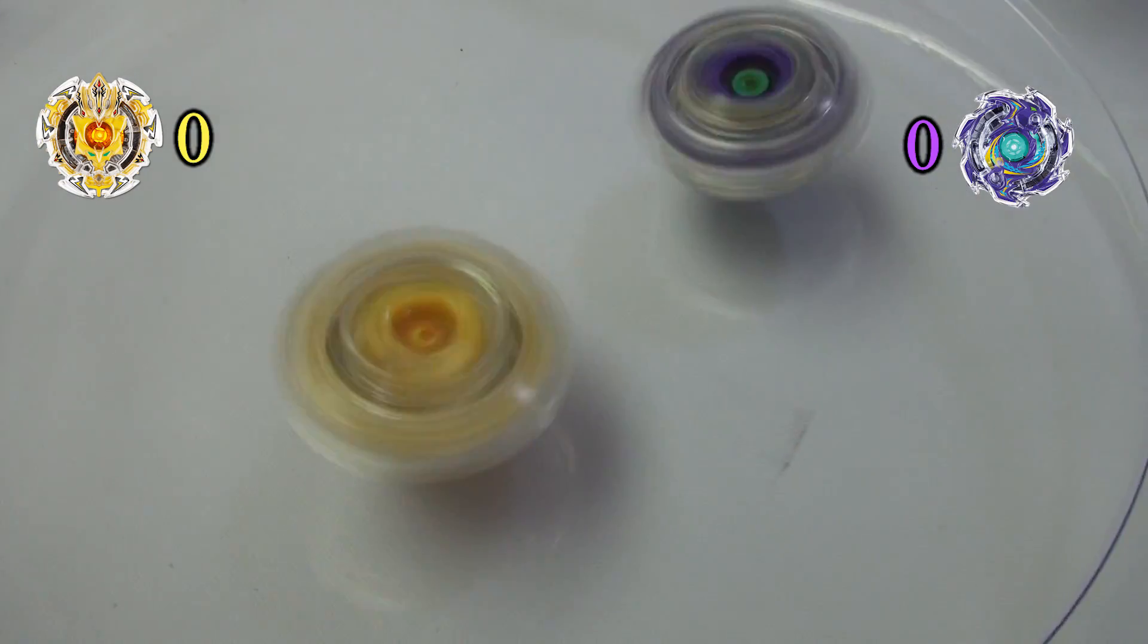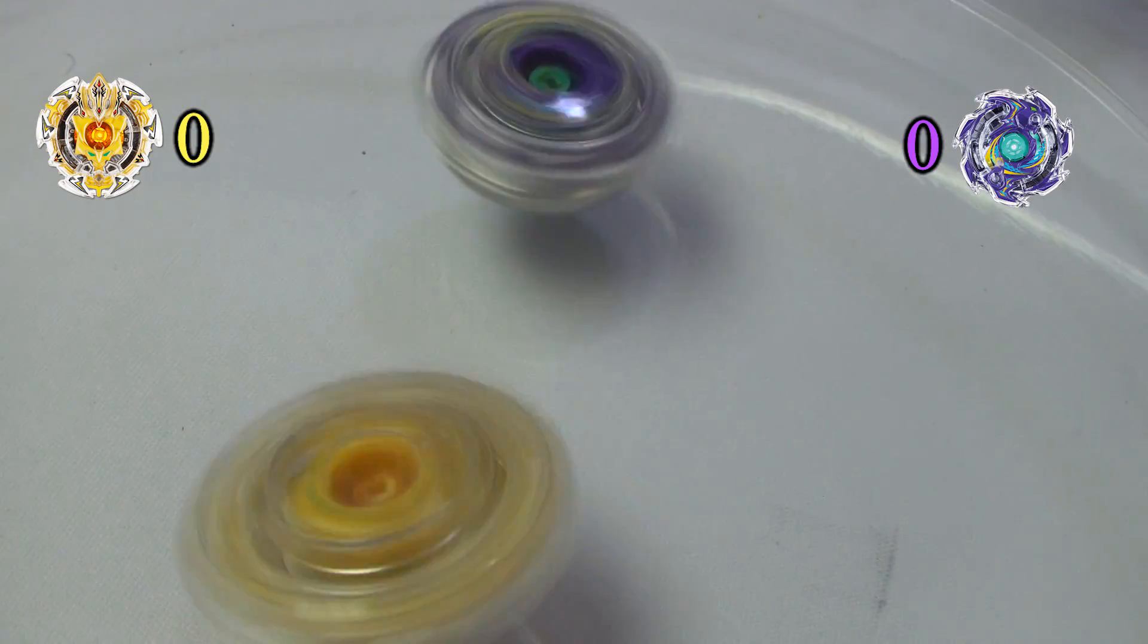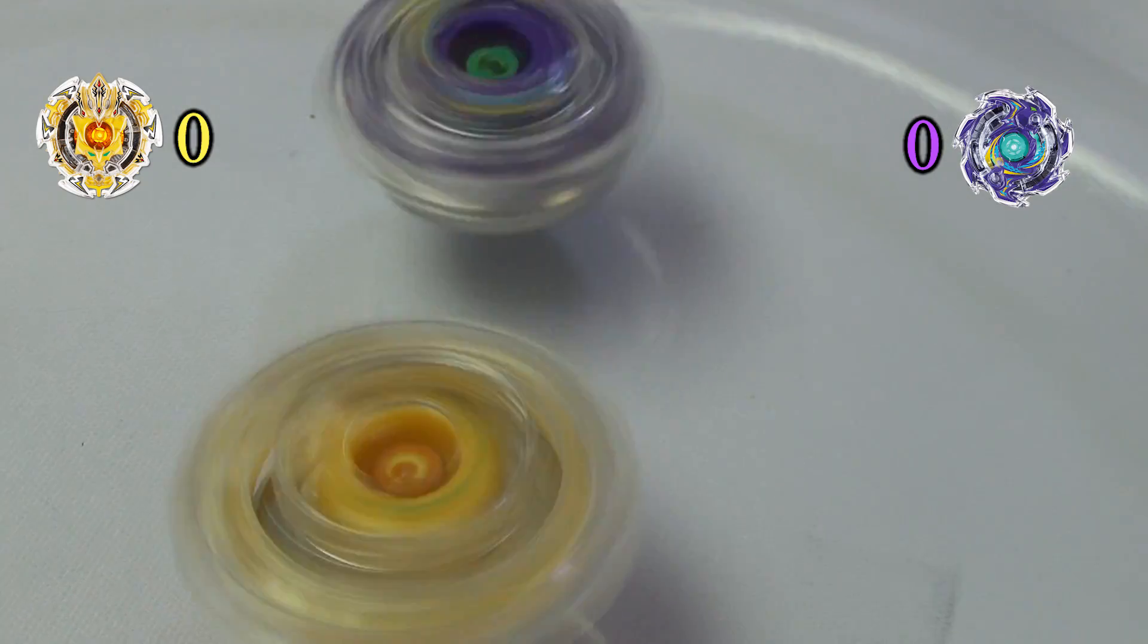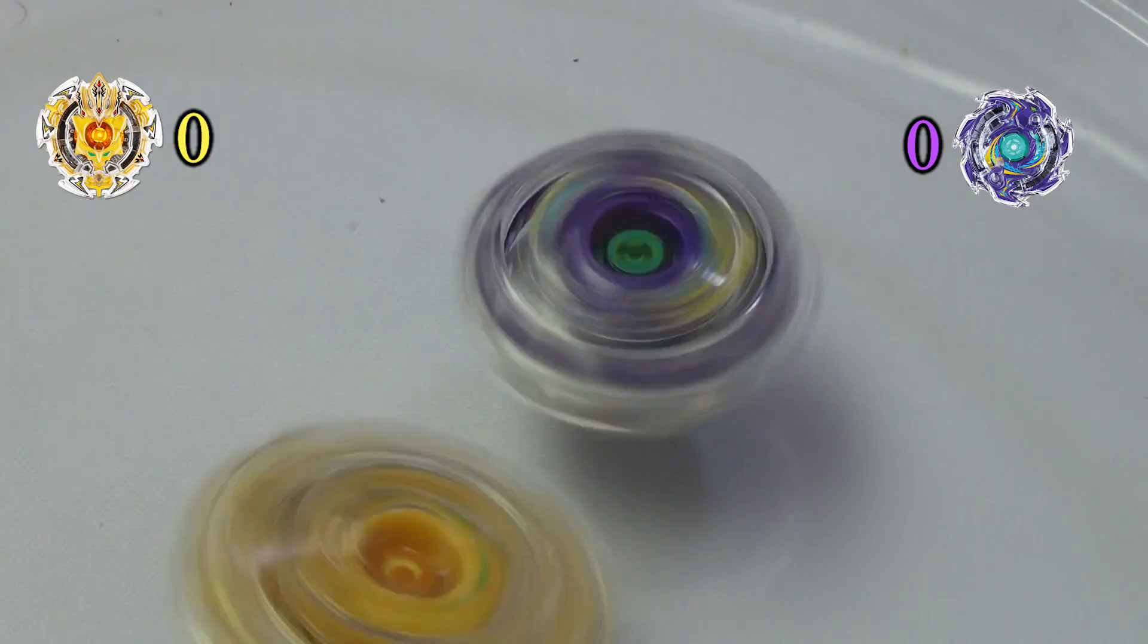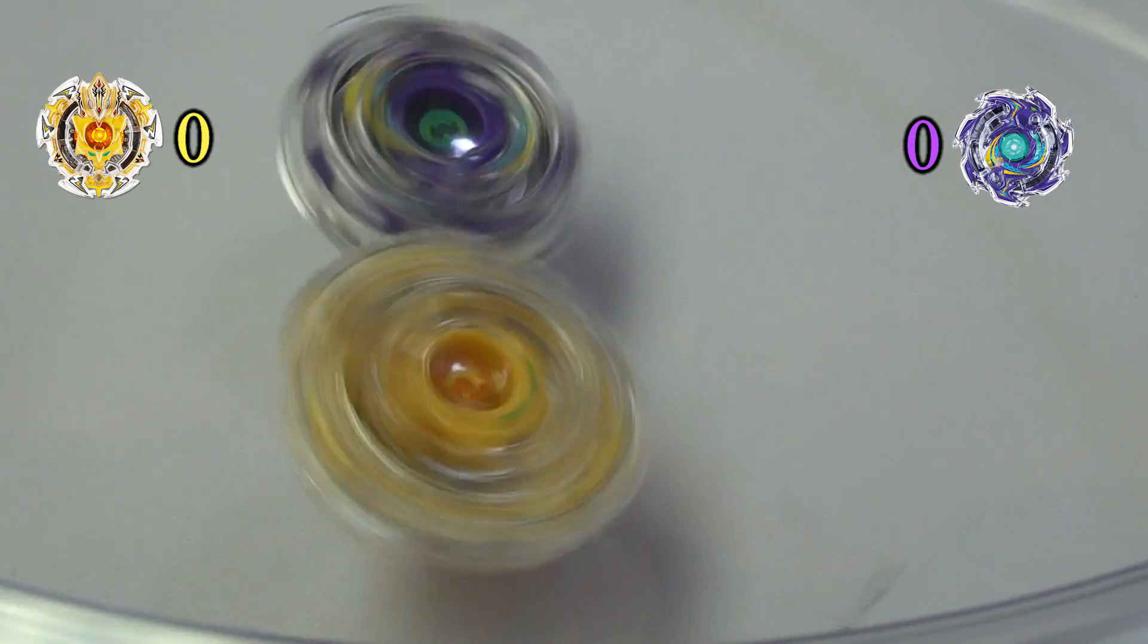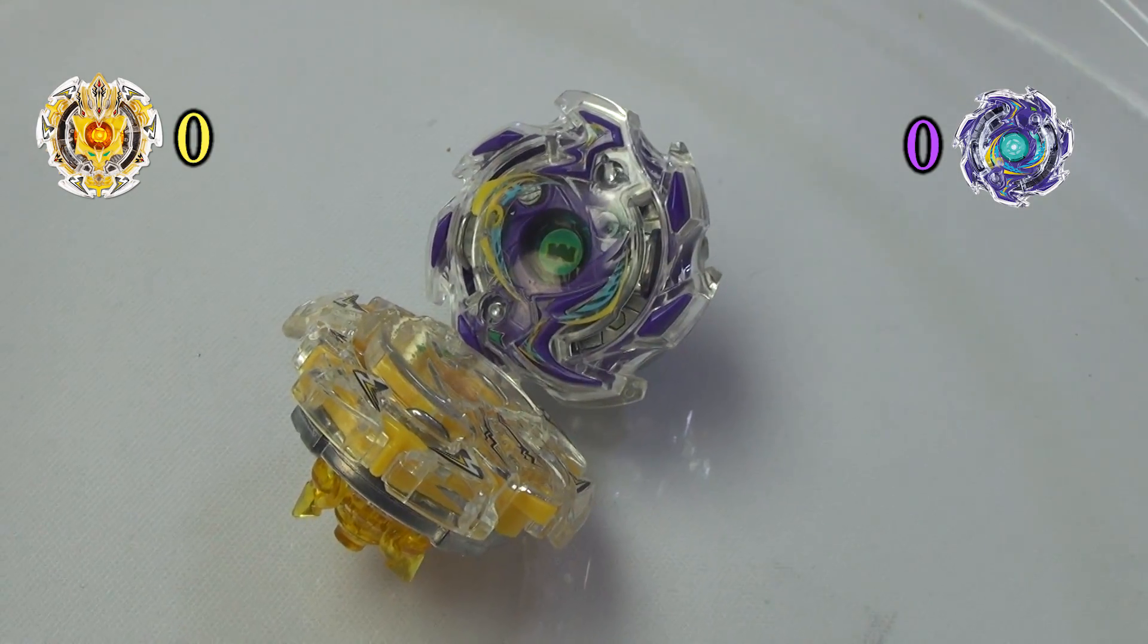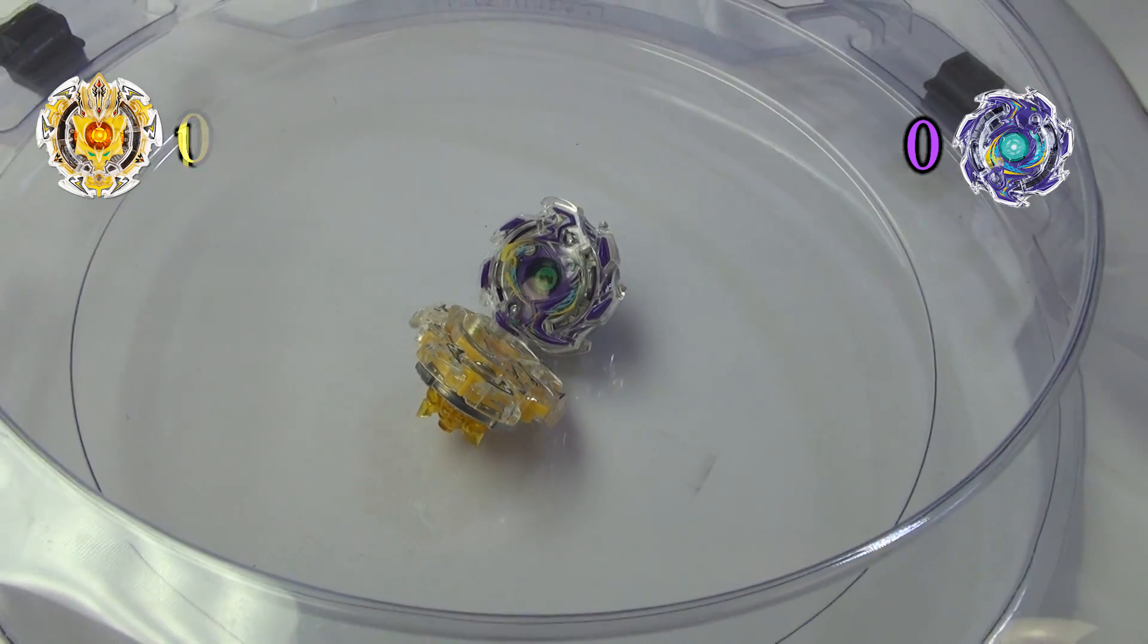Who will win? Will it be Trident Heavy Claw or Wyvern Heavy Massive? As we can see, both of these offensive beys are attacking each other. Wyvern is starting to slow down, but once again Trident is also slowing down. Both beys are clashing with their amazing might and, oh no! Wyvern is the first to stop. Our winner is Trident Heavy Claw with a score of 1-0.